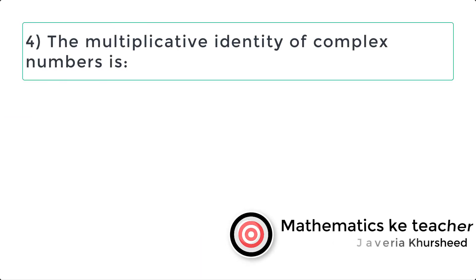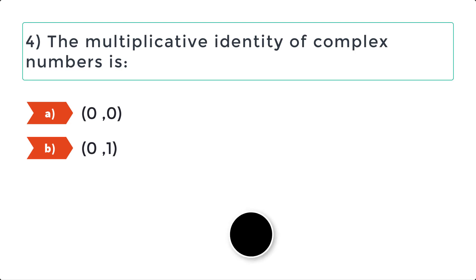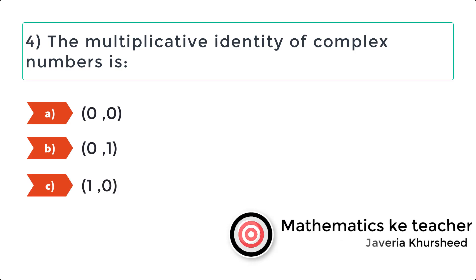4. The multiplicative identity of complex numbers is A. 00. B. 01. C. 10. D. 11.